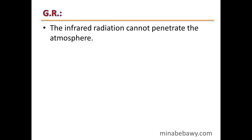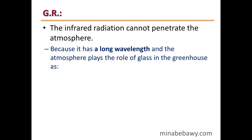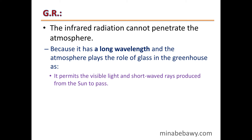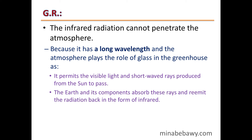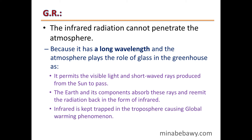Give reason: infrared radiations cannot penetrate the atmosphere. This is because they have a long wavelength, and the atmosphere plays the role of glass in a greenhouse — it permits only visible light and short-waved rays from the sun to pass. The Earth absorbs these rays and re-emits them as infrared radiation, which is trapped in the troposphere, causing the global warming phenomenon.